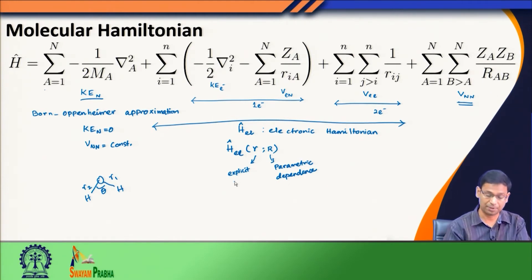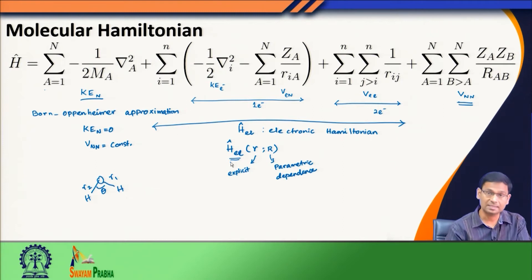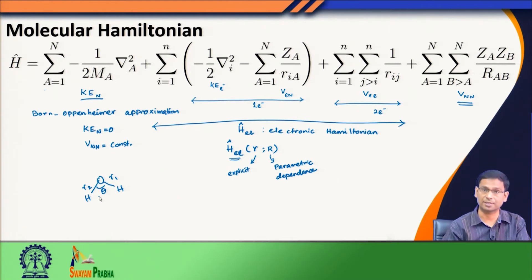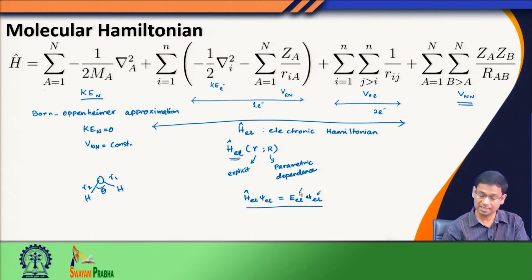What has explicit dependence is on the electronic coordinates, because the electrons are all over the place and we are trying to find the electronic part of the solution. But the solution we get — the electronic part — is applicable only for a fixed value of R₁, R₂, theta, or for a fixed nuclear geometry. Now if I solve this part of the problem, I call this the solution of the electronic Hamiltonian.